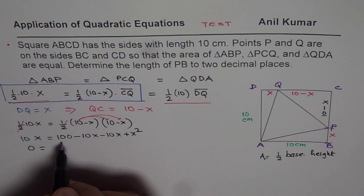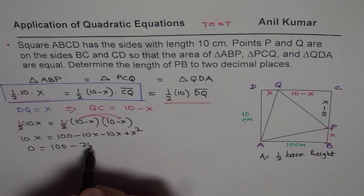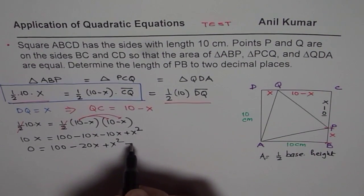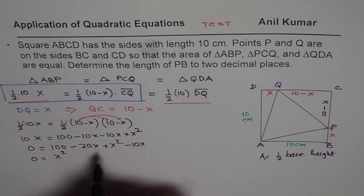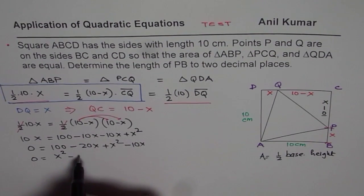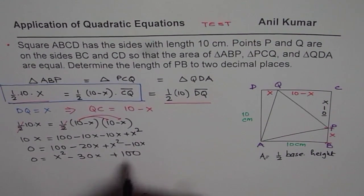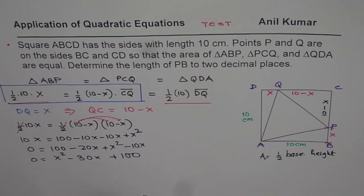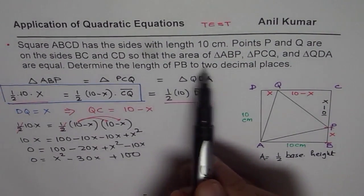Now bring this 10X to the right side, combine the like terms. So we have 100 minus, this is 20X, plus X squared minus 10X. So let us rewrite this with X squared first. Leading coefficient is 1, X squared minus 30X plus 100. So that is the quadratic equation which we need to solve to get the value of X, which is PB, which is the length of PB to find.